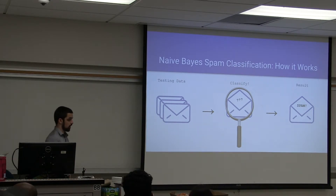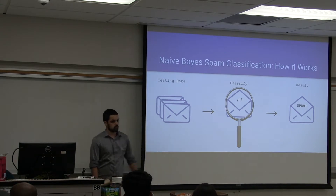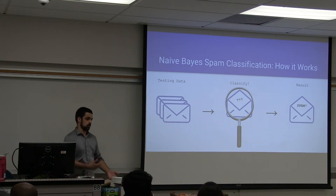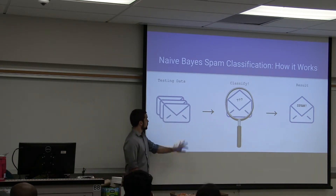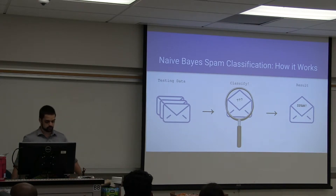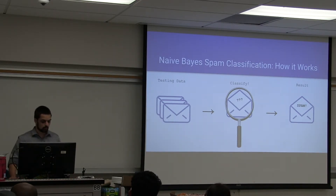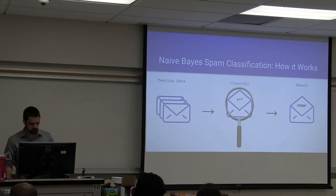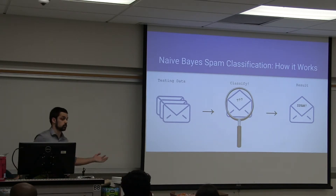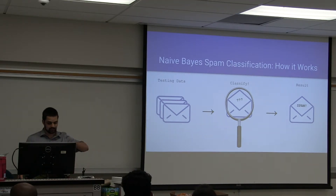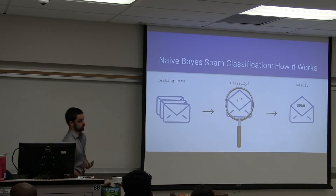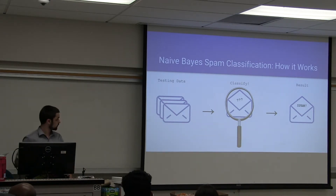The second step is testing. We have a separate set of data — our testing data — and it's very important that these are separate. If we're training and testing on the same data, we're not really getting anything out of it. We take our testing data and classify each email, determining the probability of it being spam and the probability of it not being spam. This is done by analyzing the email assuming it is spam — multiplying the probability of each word in that email being spam — and then repeating that process assuming the email is a legitimate email.